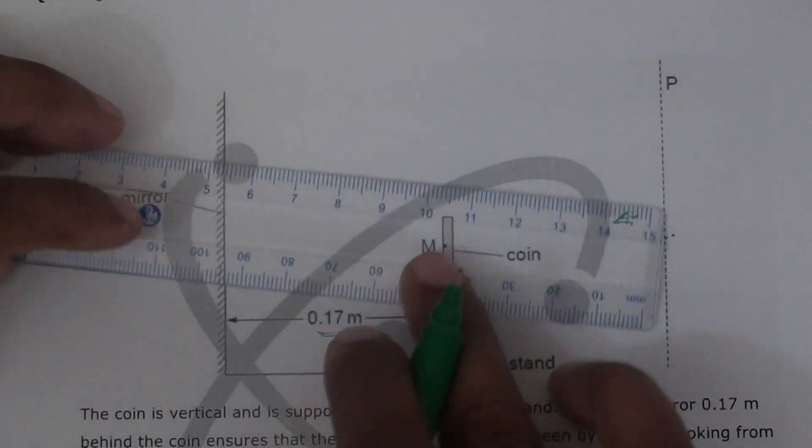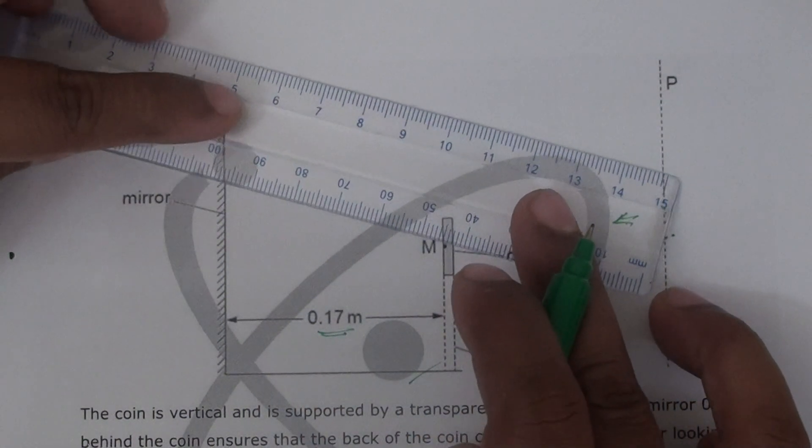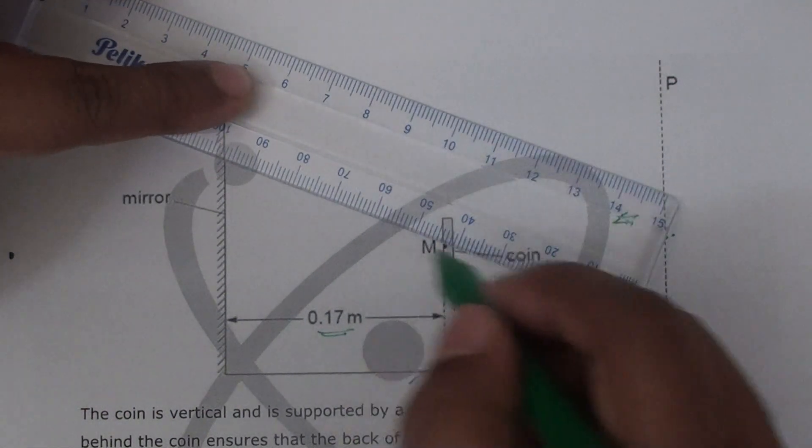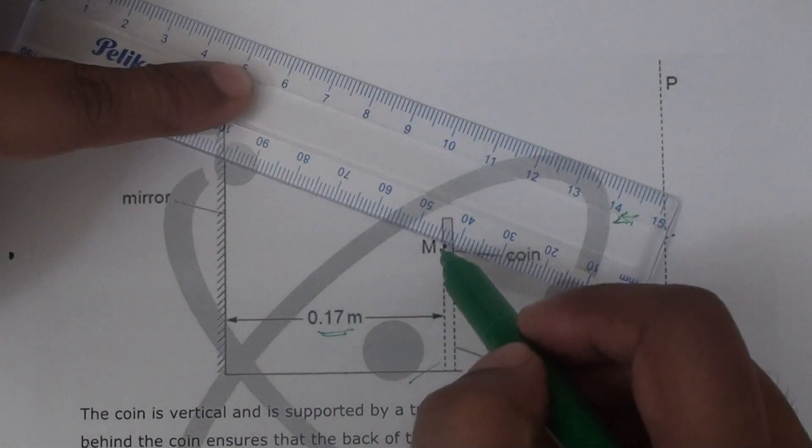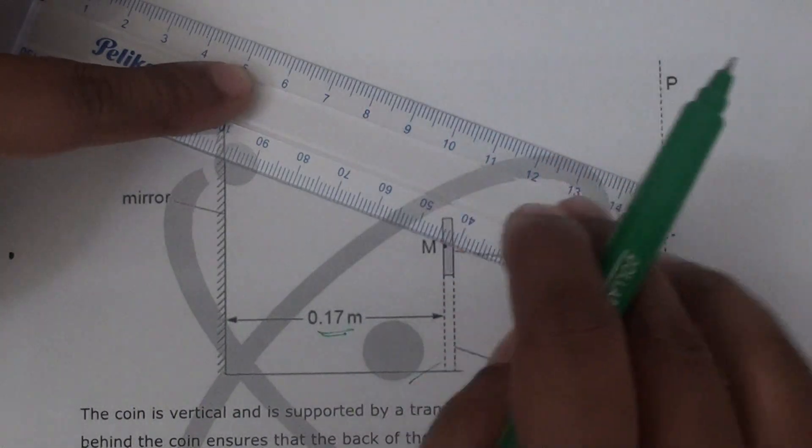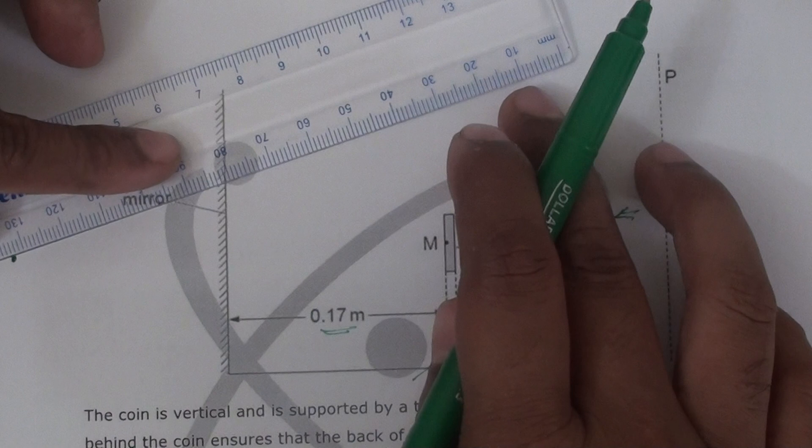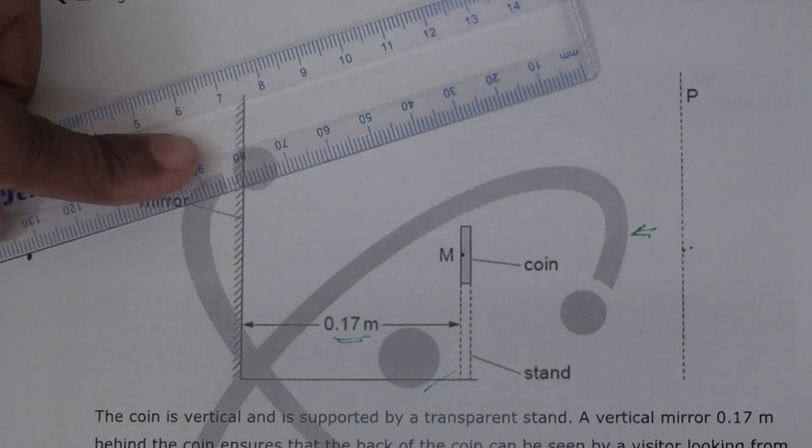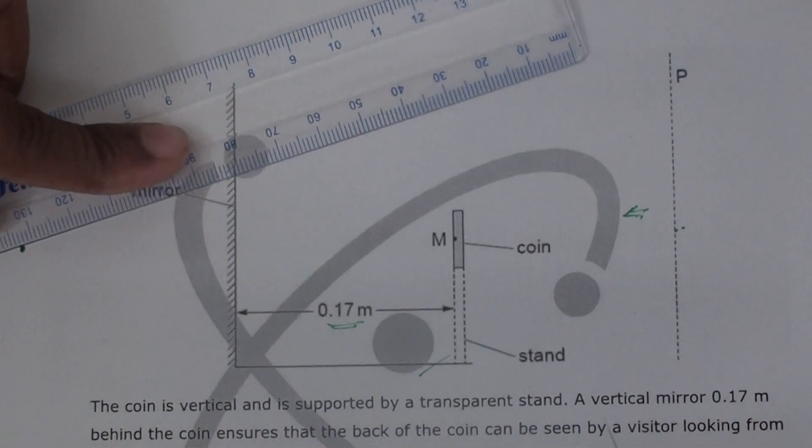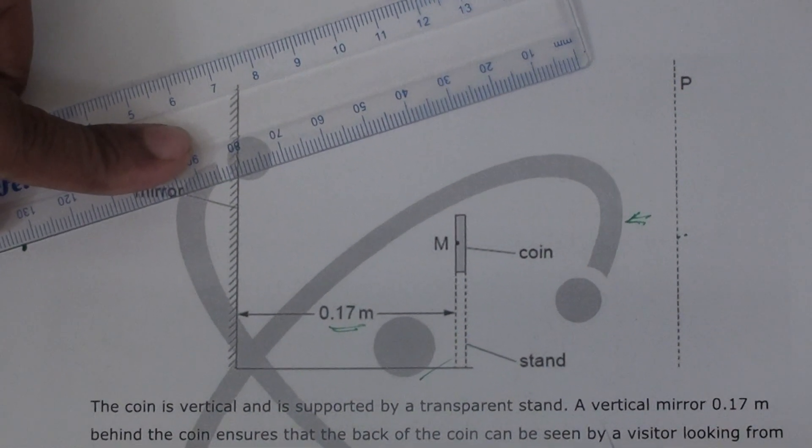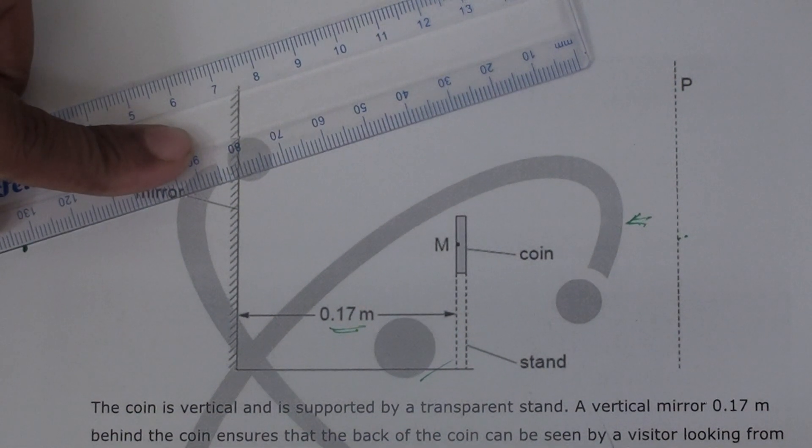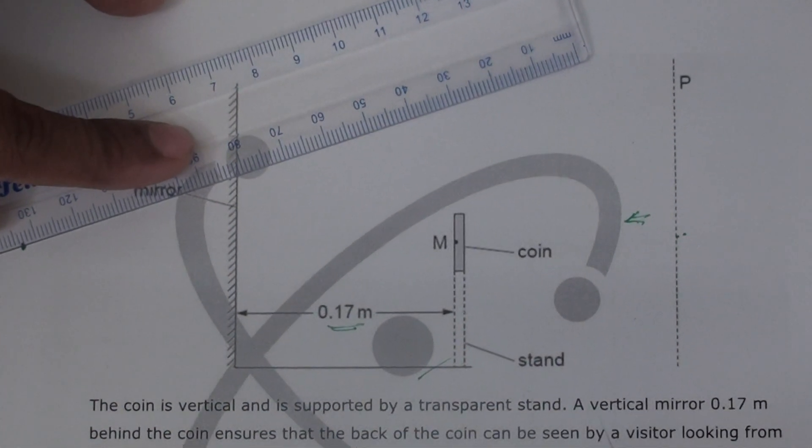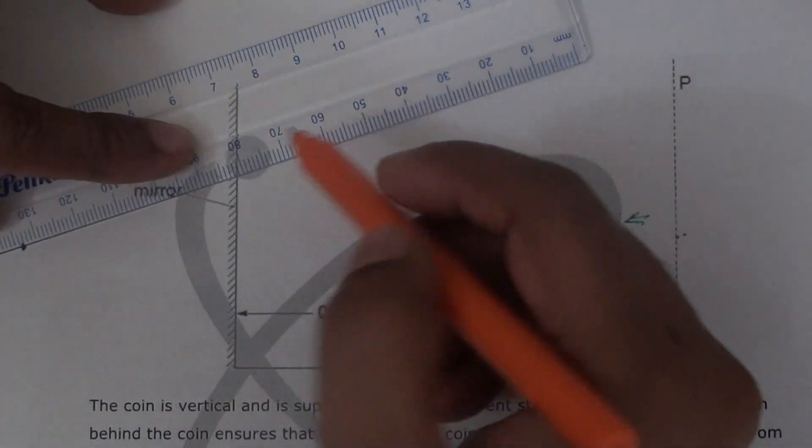So we will take just two light rays which will come from, let's suppose, at this point. Now we don't draw incident ray first—we draw reflected rays.